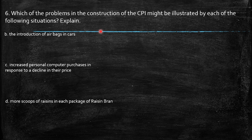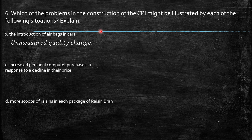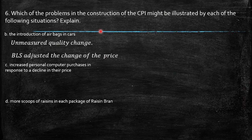The other example is the introduction of airbags in cars. It's similar to the cell phone case — we're talking about unmeasured quality change. The quality is better because of the safety provided by cars. However, the CPI doesn't take that into account and just measures the variation in price. The Bureau of Labor Statistics adjusted the change in price, but the quality improvement is not measured.